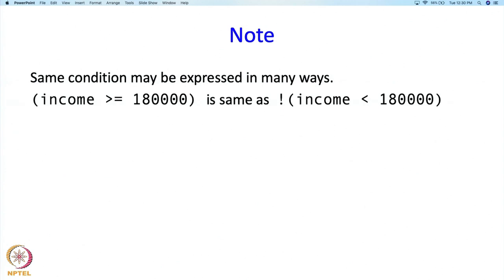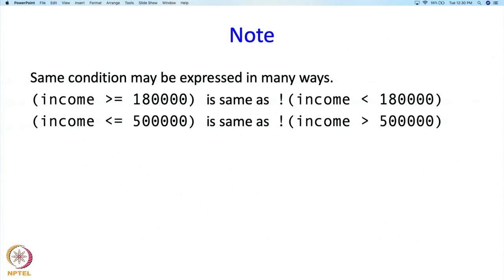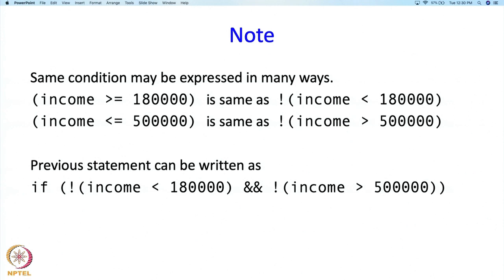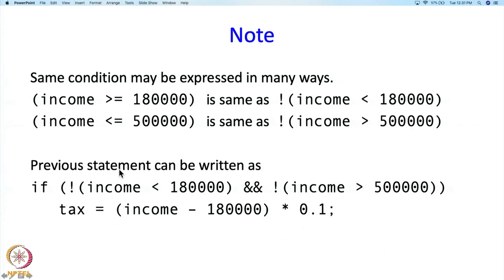The same condition may be expressed in many ways. For instance, income >= 180000 could also be written as 180000 <= income, or equivalently as !(income < 180000). Similarly the upper bound condition can be rewritten using NOT. This is just to alert you that the same constraint we are talking about can be written in many, many ways.